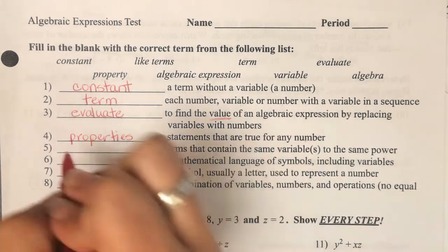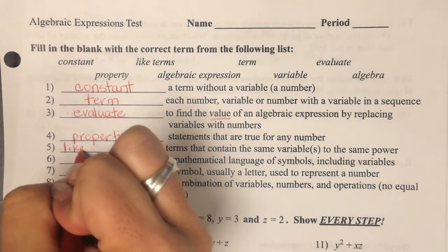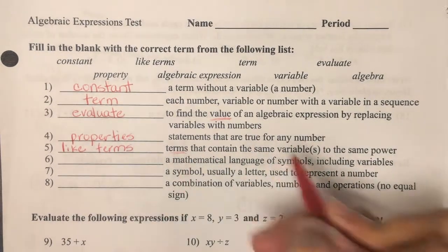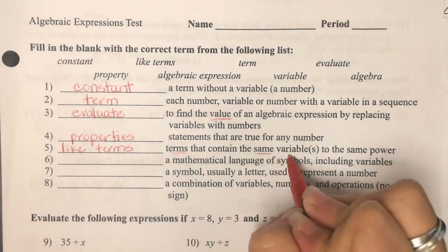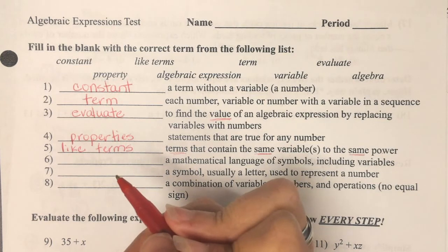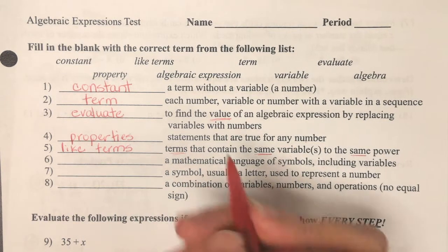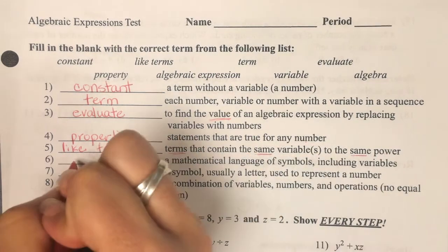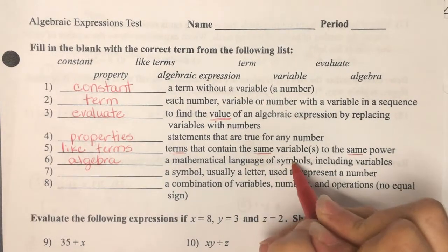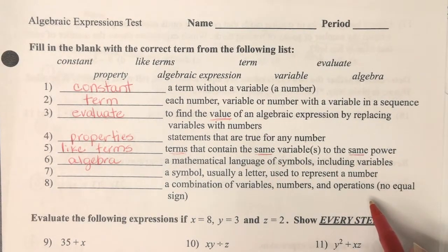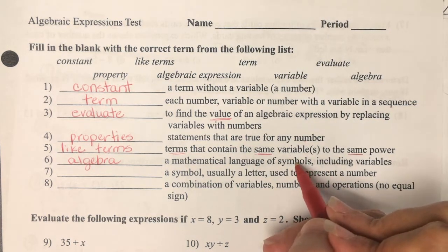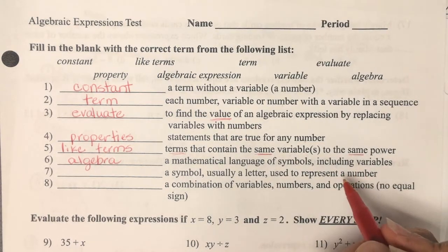We studied properties. Properties are statements that are true for any number. So we talked about like x plus 1 is the same as 1 plus x, that identity property. Like terms, terms that contain the same variable to the same power. A mathematical language is algebra. It is a mathematical language of symbols including variables. We talked a bunch about it's going to have pluses and minuses, it's going to have letters, numbers.